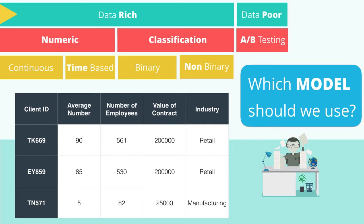To determine whether we're data rich or poor, we need to look at our data to get a better understanding. Looking at our data set, we see that we have the following information on each client: the average number of tickets each client submits per week, the number of employees per client, the value of the contract with each client, and the industry of each client.